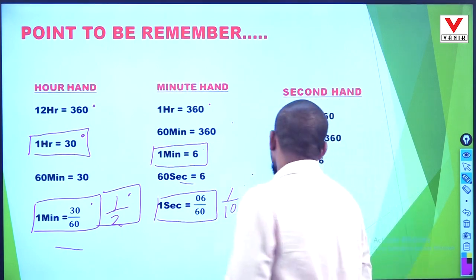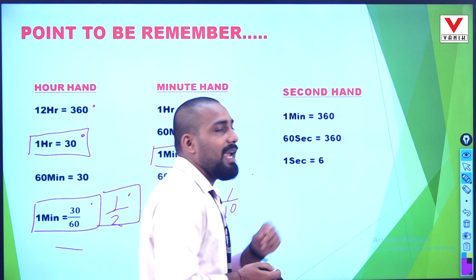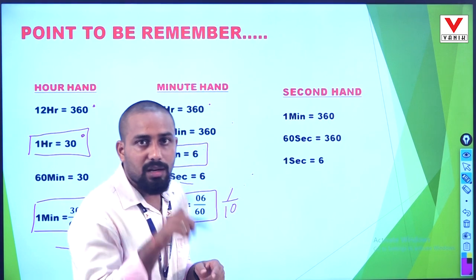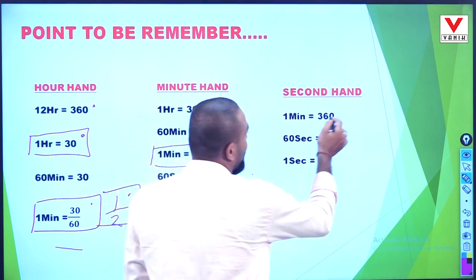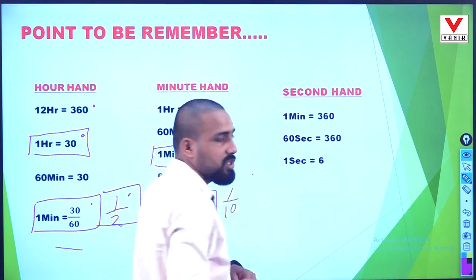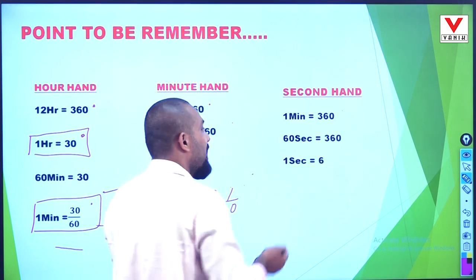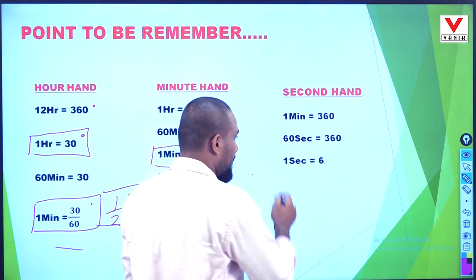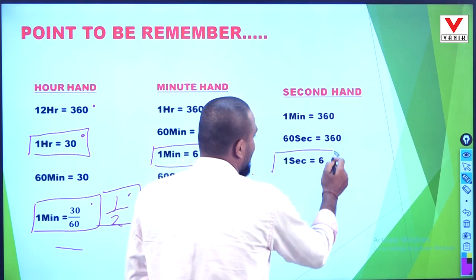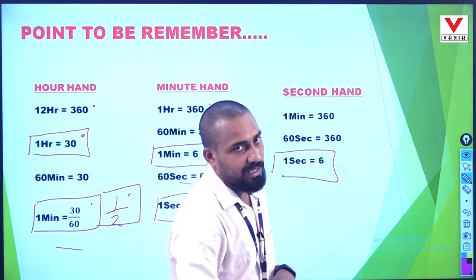Now, the second hand. The second hand covers the whole clock in 1 minute, so 1 minute equals 360 degrees. That means in 60 seconds it covers 360 degrees, so in 1 second the second hand covers 6 degrees.